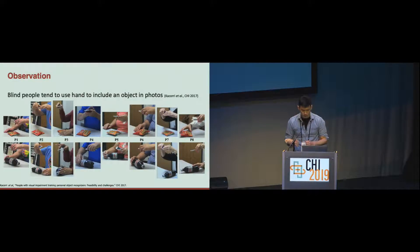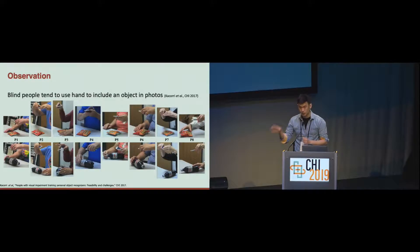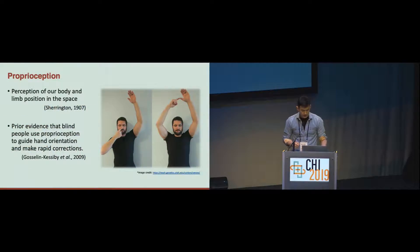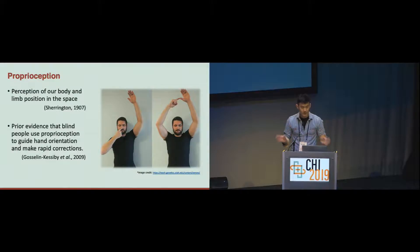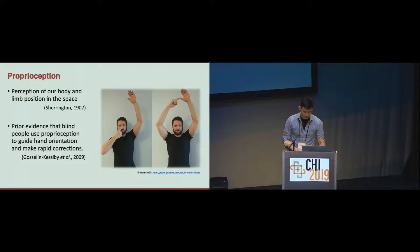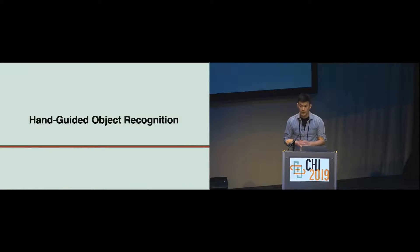In our prior work, we observed that blind participants tend to use their hand to indicate and include the object in photos, especially in the context of training an object recognizer. We believe they are using proprioception — the sense of knowing the relative positions of their body parts. There is prior evidence that blind people use this proprioception to guide hand orientation and make rapid corrections. Inspired by this observation, our focus is on implementing object recognition that can be guided by hand input.